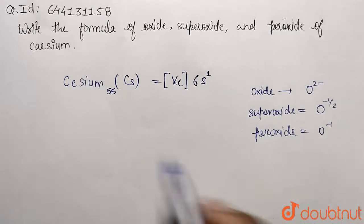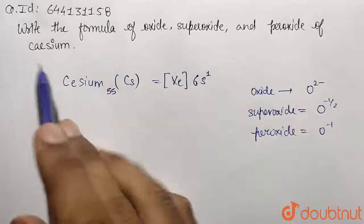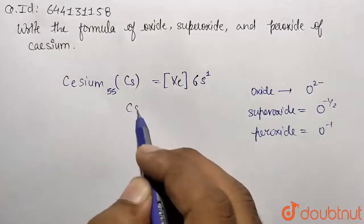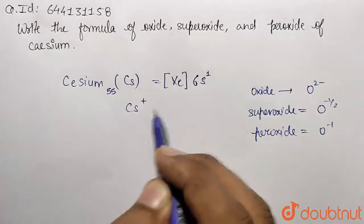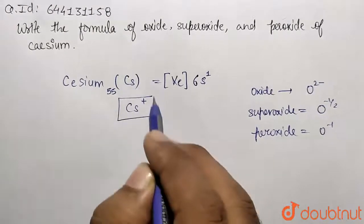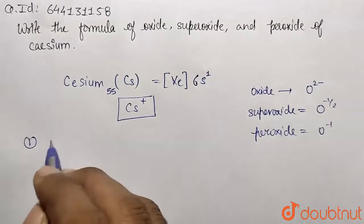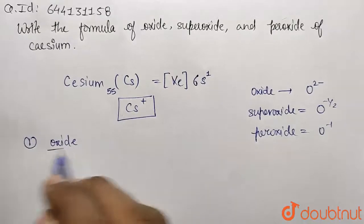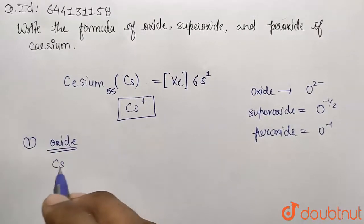Now we want to write the formula for oxide, superoxide, and peroxide of cesium. Cesium, we already know, is going to show positive 1 oxidation state after losing this electron.